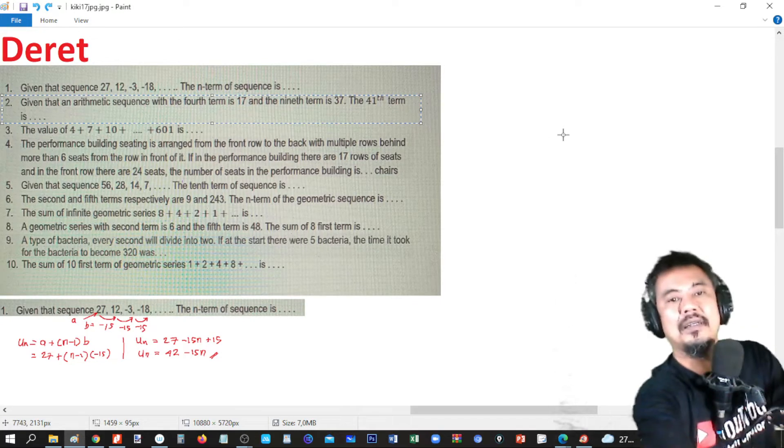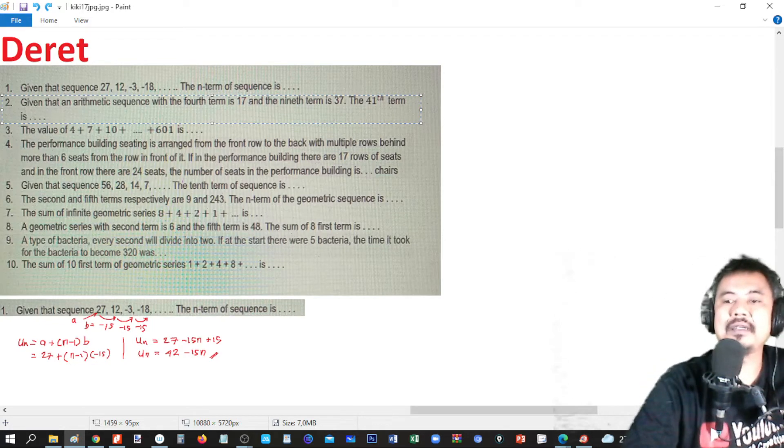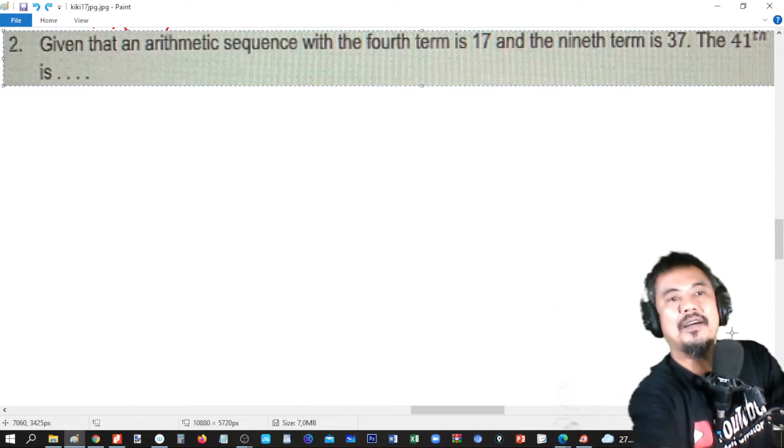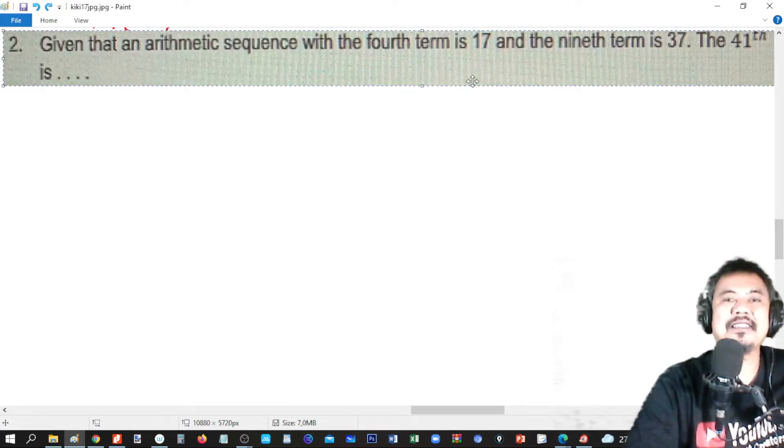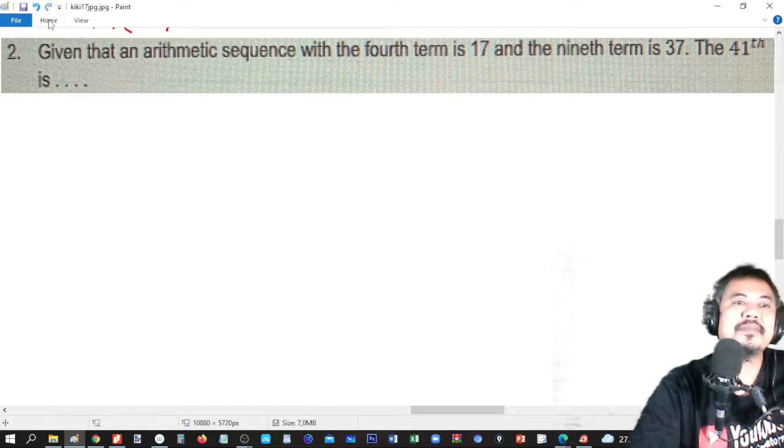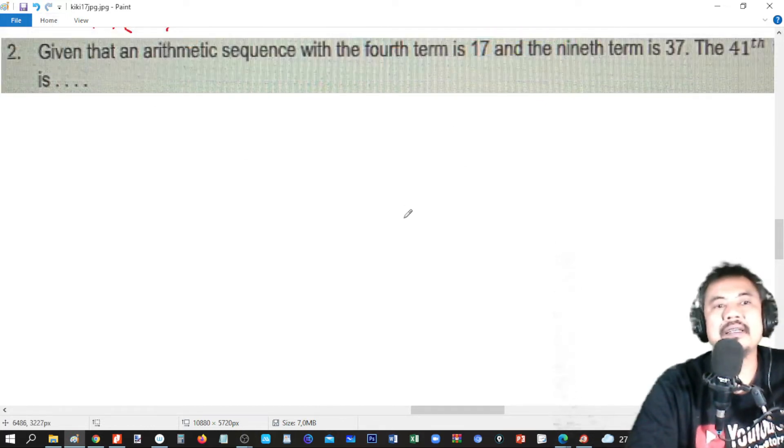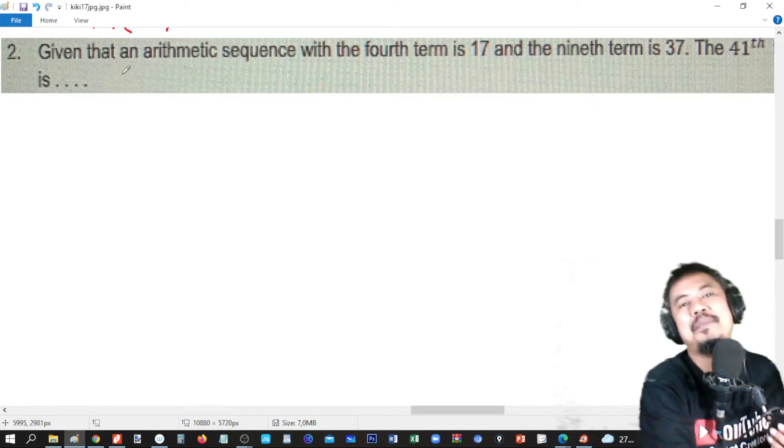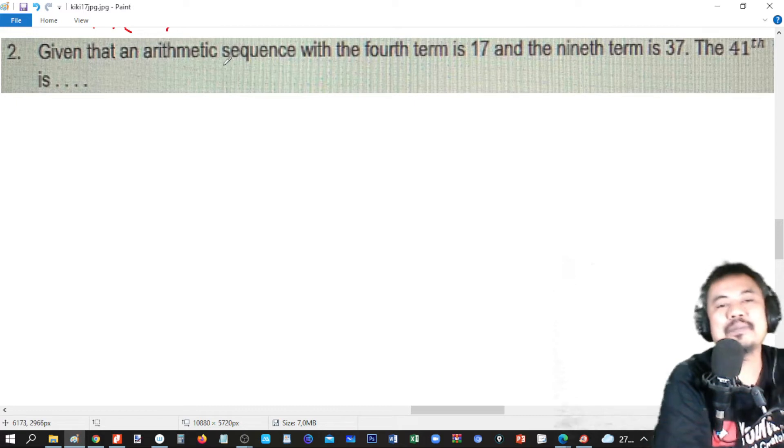Okay. And then, place it here. Okay. Now, number 2. Given that an arithmetic sequence with the fourth term is 17 and the ninth term is 37.